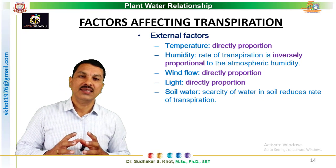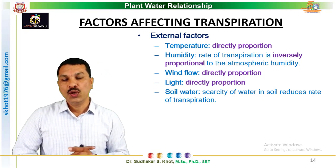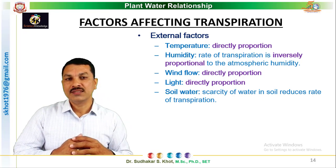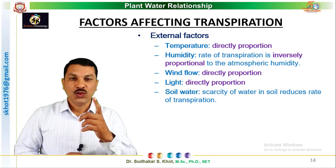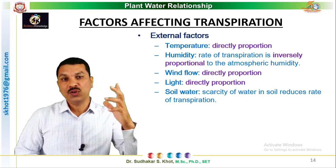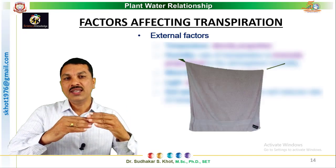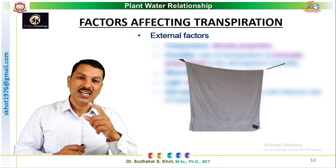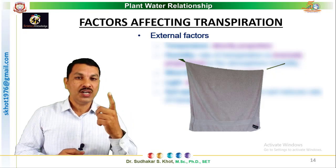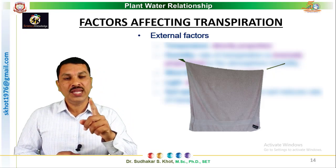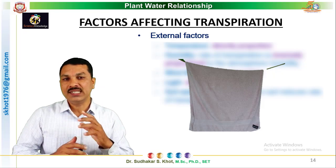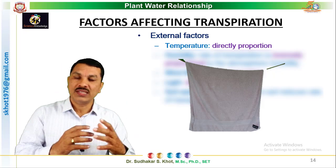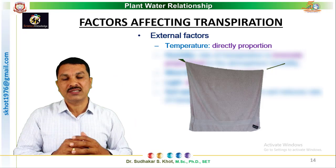Now let us discuss the factors that affect the rate of transpiration. Broadly, these can be divided into external factors and internal factors — remembering our towel drying example, where drying depended on the set of conditions. The first external factor is temperature. The rate of transpiration is directly proportional to temperature. Higher temperature means a higher rate of transpiration; lower temperature means a lower rate.